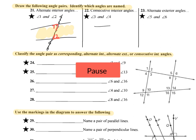For the next angles, again we have our transversal line. We have to draw consecutive interior angles and call these angles three and four. They have to be in the interior part of the lines, but consecutive means they have to both be on the same side of the transversal. We can draw them both on the left side or both on the right side. I'm going to draw them both on the right — angle three and angle four, both interior and on the right-hand side.